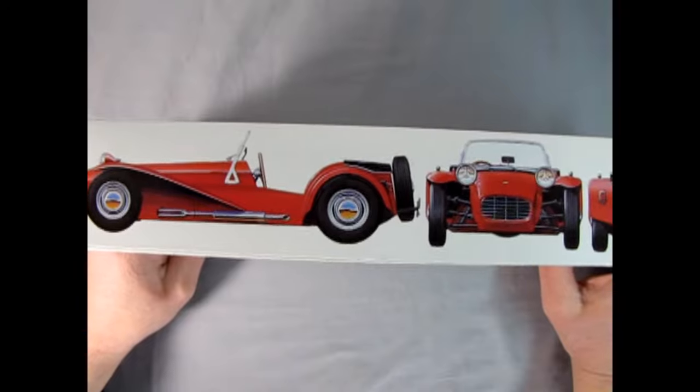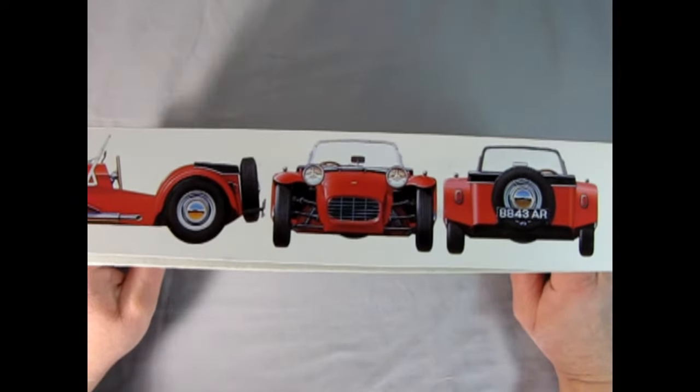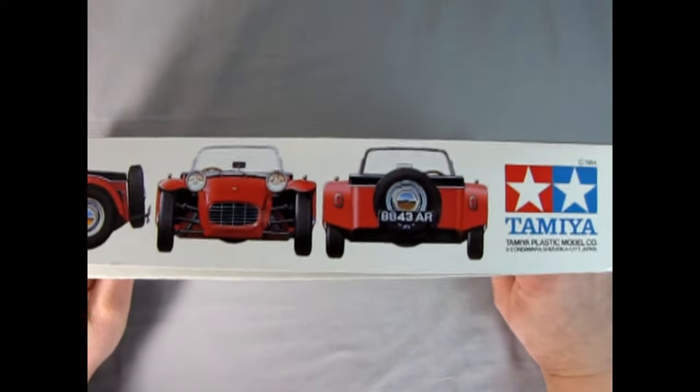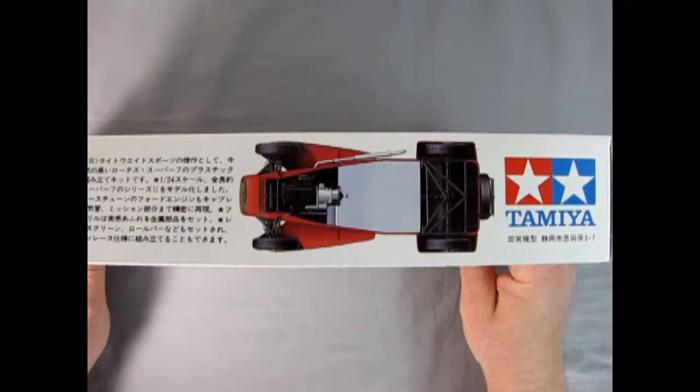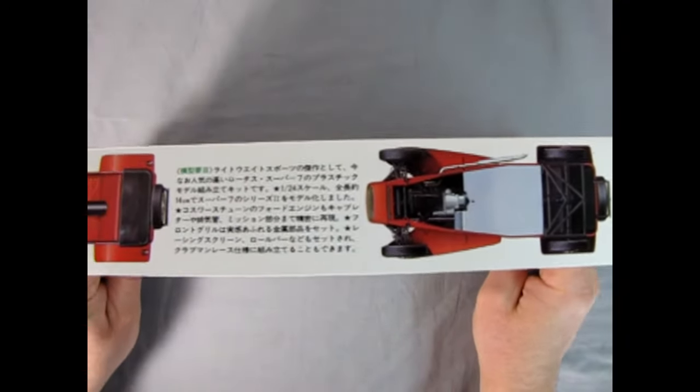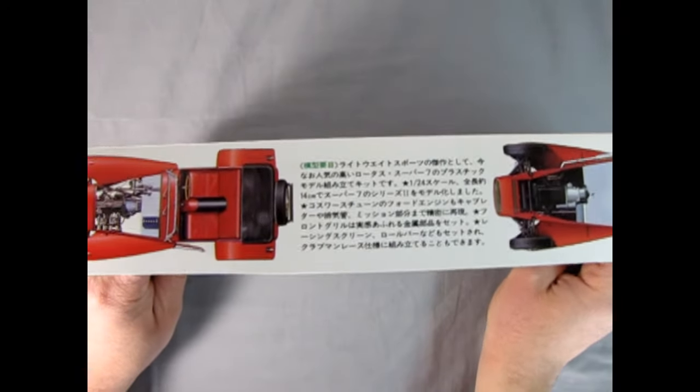If we look at this side of the box we get some really cool illustrated views of Colin Chapman's famous little sports car. And this side of the box shows both an underside view as well as the top view of the little car.